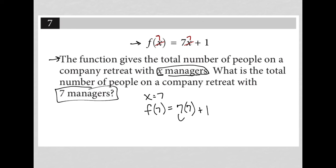And to continue the math here, 7 times 7 is 49. 49 plus 1 is equal to 50. So there are 50 people on the company retreat if there are 7 managers.